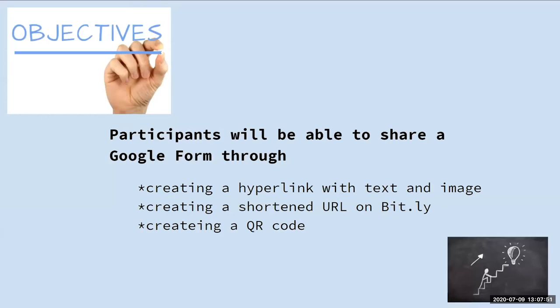Today we have a very busy day. You are going to be able to share your Google Form through creating hyperlinks — hyperlinks with text and hyperlinks with an image. You are also going to create a shortened URL on the Bitly website, and you're going to be creating a QR code. Now if all of these terms sound very foreign to you, do not worry. I will break down each of these for you to lower your affective filter.